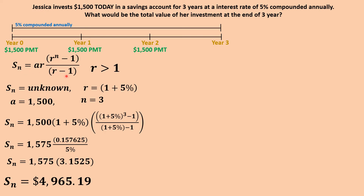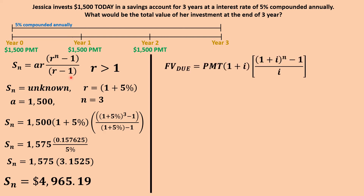Now we rearrange the geometric series equation using time value of money variables to make it easier to understand. We substitute: Sₙ becomes FV (future value of simple annuity due), a becomes PMT (payment), and r becomes (1 + i). The denominator simplifies because (1 + i) − 1 = i, leaving just i. So the final FV formula becomes: FV_due = PMT × (1 + i) × [(1 + i)ⁿ − 1] / i.